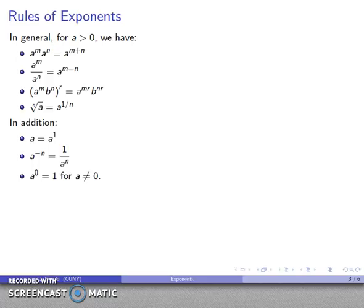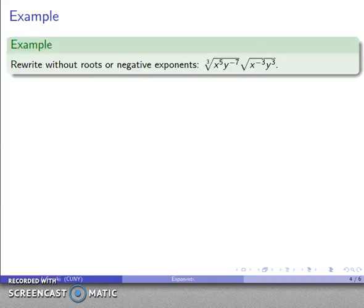Again, most of our rules of exponents, we assume our base is going to be positive. If our base is negative, we have to do some things with the signs. And many of these things, many of these rules, don't really apply. All right, so let's try an example.